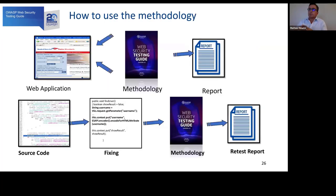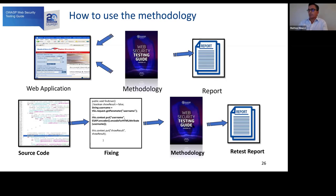It is important to understand how to use the methodology correctly, because we see that more and more companies are adopting the Web Security Testing Guide but perhaps not in the right manner. The right way is: perform a test, produce a report, but then involve the development team in fixing the vulnerabilities — showing them the vulnerable code and the countermeasure to implement. After that it is important to perform a retest and produce a retest report to be sure that every critical vulnerability is fixed correctly.